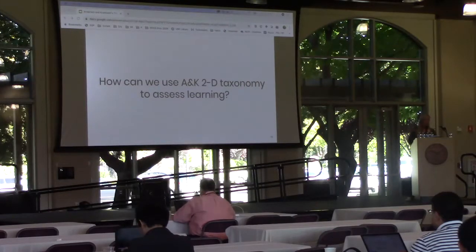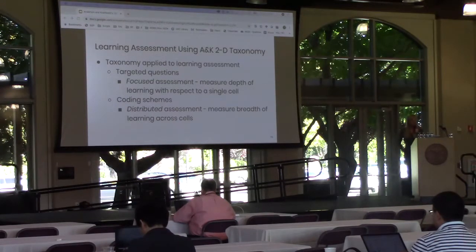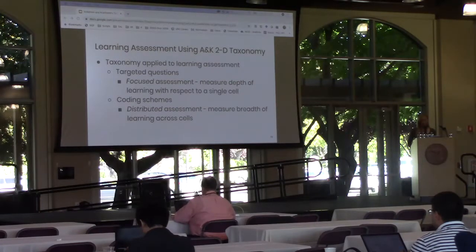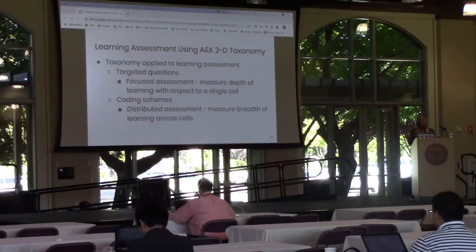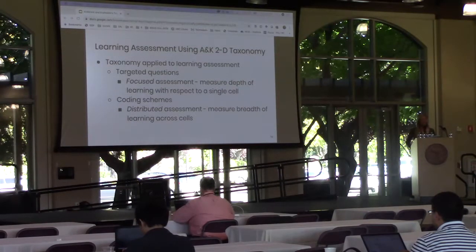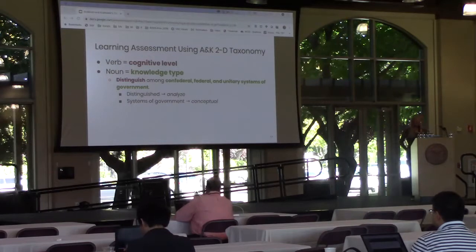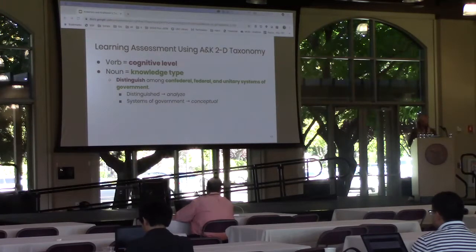Next we'll look at how we can use the Anderson and Crathwell taxonomy to assess learning. Similar to its application in search learning scenario creation, the taxonomy can also be used to develop learning assessment. The learning assessment can take two different forms. The first is assessment as targeted questions, focused and measuring the depth of learning with respect to a single cell. The second form uses the assessment as a coding scheme to score summaries or short answers — distributed, measuring the breadth of learning across cells by tracking how many cells a searcher exhibited.